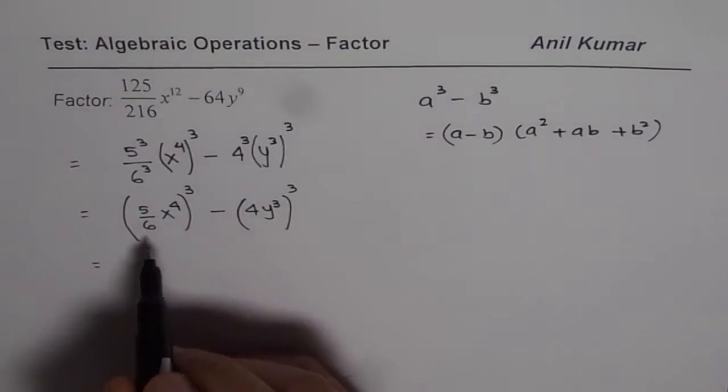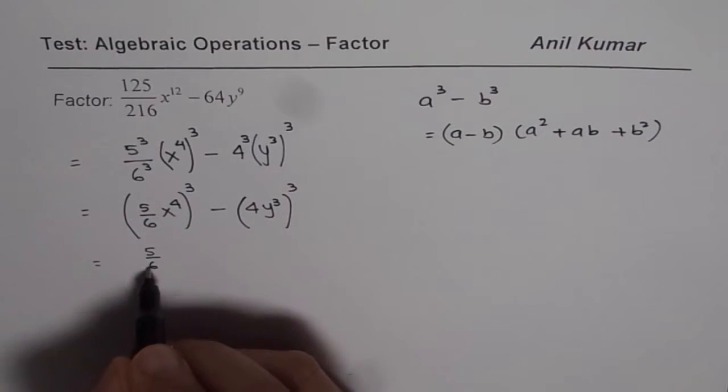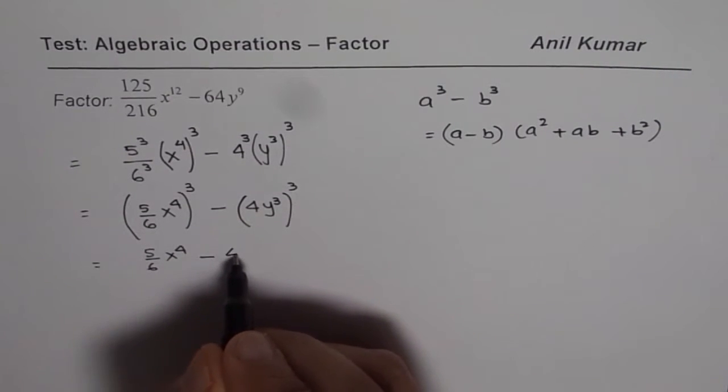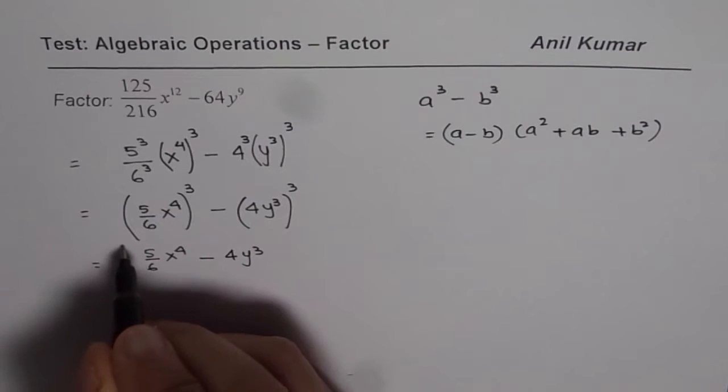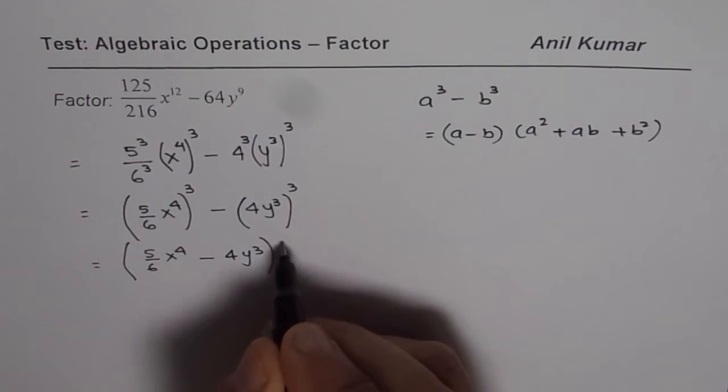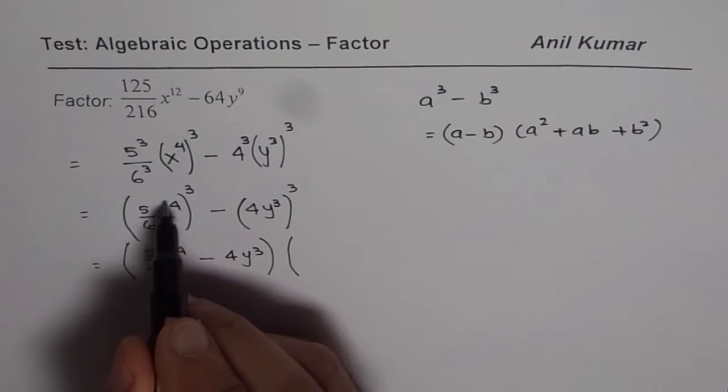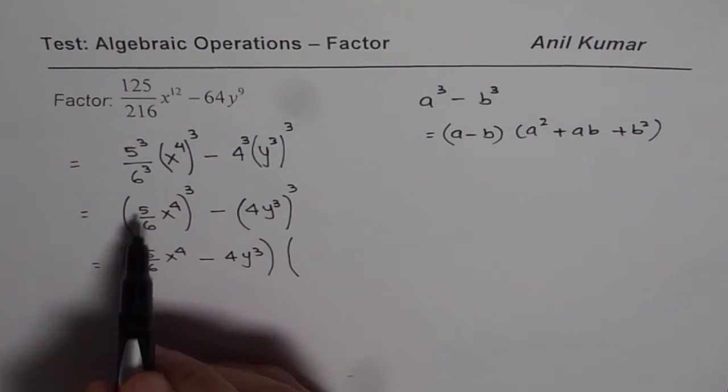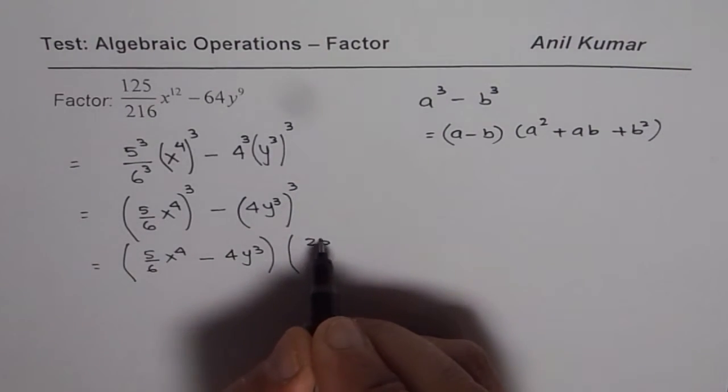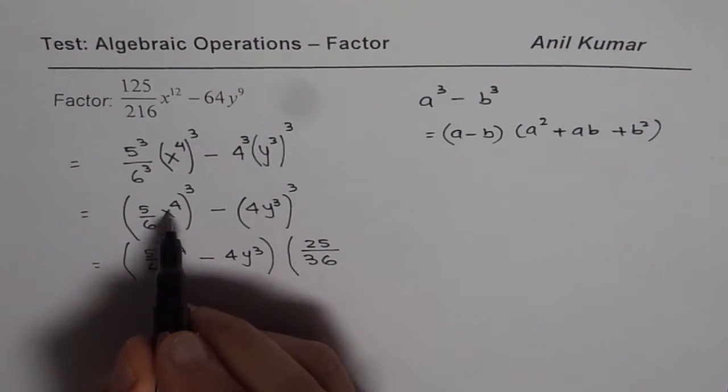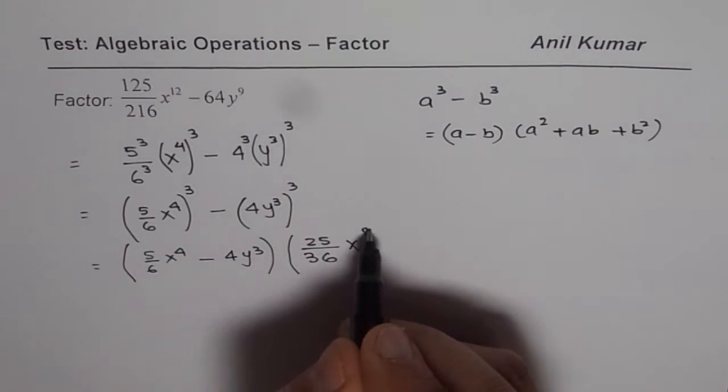So a minus b. A is 5 over 6 x to the power of 4 for us. That is a minus b which is 4y cube. So that is (a minus b) times a square. That means you need to square this. When you square 5, you get 25. When you square 6, you get 36. When you square x to the power of 4, it becomes 8.